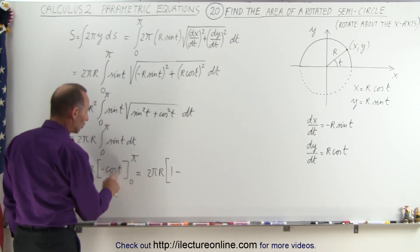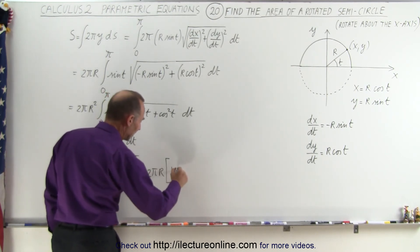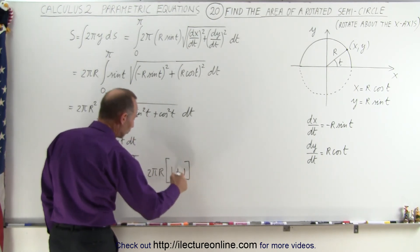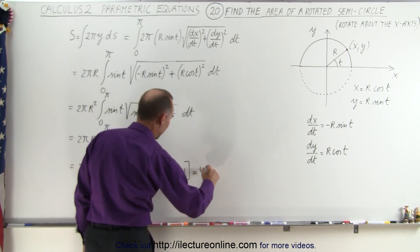when we plug in the lower limit, the cosine of 0 is 1 but we have the negative there. Negative times negative makes a positive 1. So that's 2 times this which is equal to 4π.